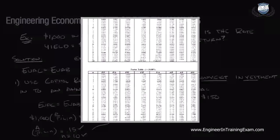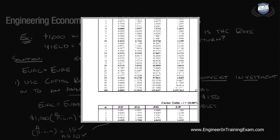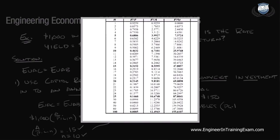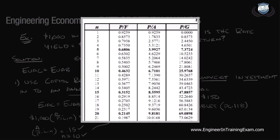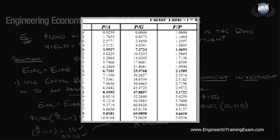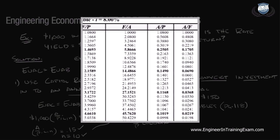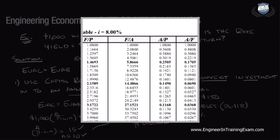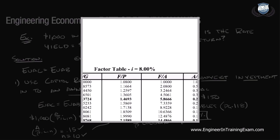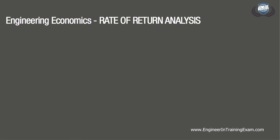Referencing the compound interest tables on page 118 of the NCEES Supplied Reference Handbook, relocate the period N equals 10 in the far left column, and work horizontally to the A/P column in each table to determine which one has the value of 0.15. It is determined that the closest interest rate is 8%. So the rate of return for this investment is approximately 8%.